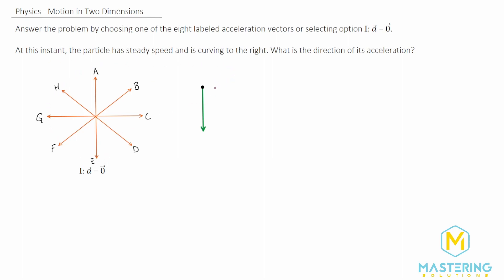The question says that at this instant, the particle has a steady speed and is curving to the right. So which vector right here is a representation of the acceleration?